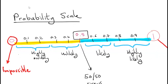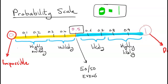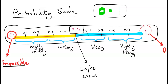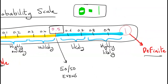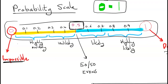You start off by looking at the probability scale. The probability scale always operates from 0 to 1, with 1 being something definitely happening and 0 being impossible to happen. Everything can be measured along that probability scale. In the middle, 0.5 implies that an event has a 50-50 chance, or an even chance of happening.